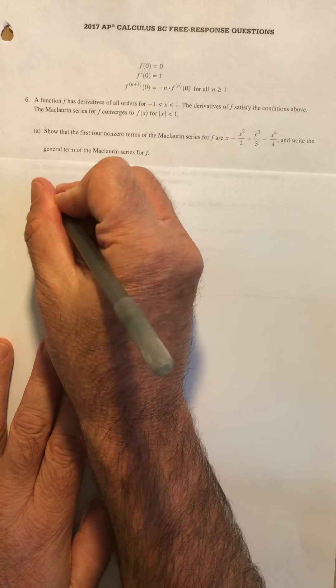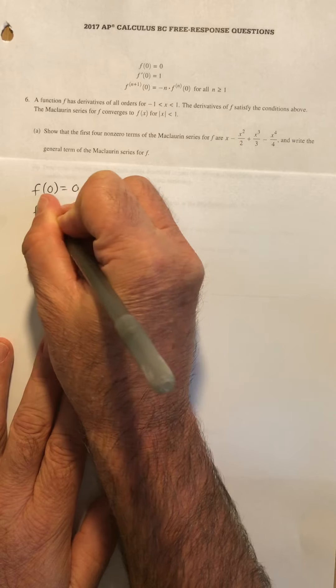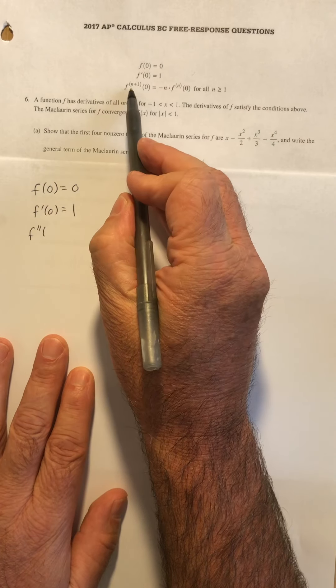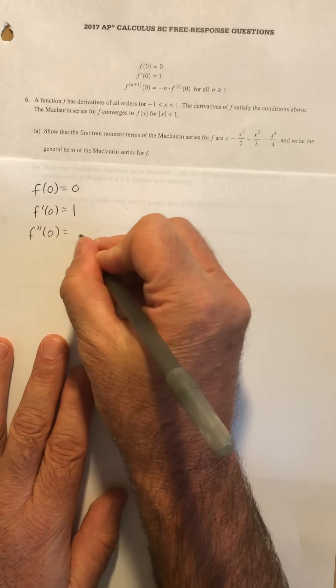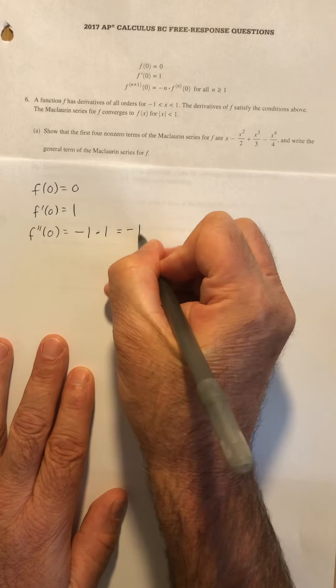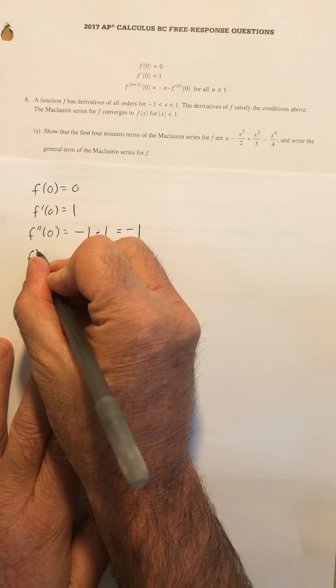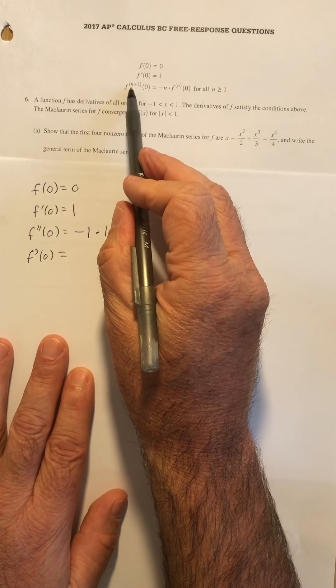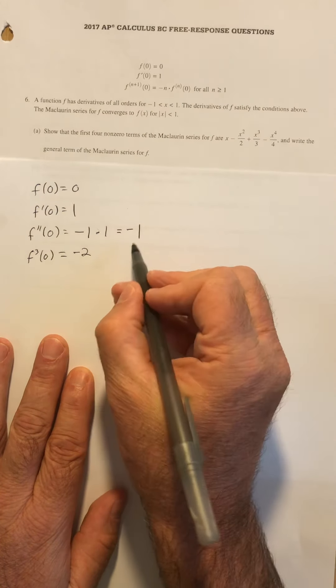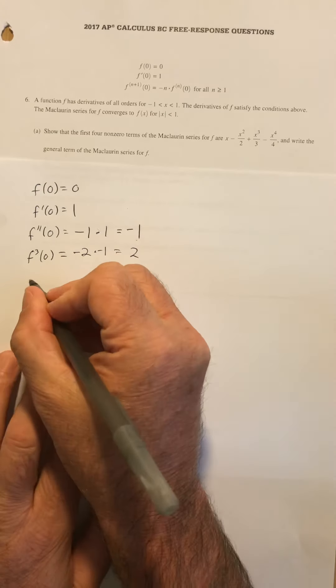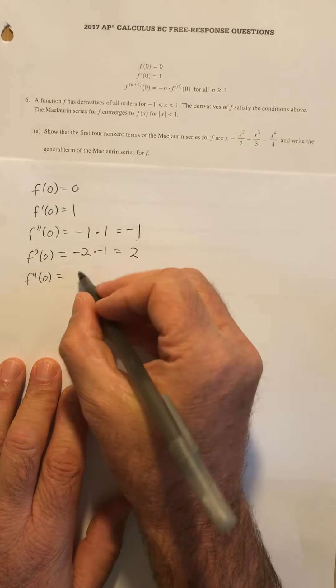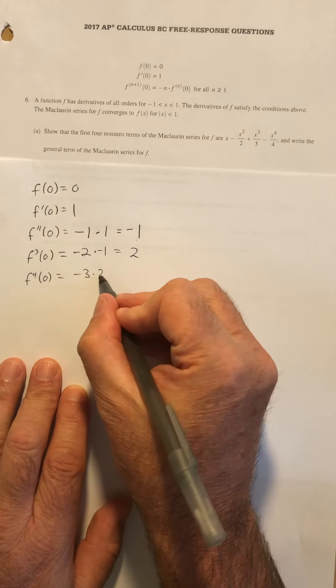So let's write a few more terms of that. We got the value of the function at zero. The value of the derivative at zero is one. The value of the second derivative, so that's when n equals one here, is going to be negative one times the first derivative at zero, which we know is one. So the second derivative ends up being negative one. The third derivative at zero is going to be when n equals two, third derivative. So that's going to be negative two times the second derivative, which is this number, negative one. And I get two for that. And let's do the fourth derivative, which is going to be n equals three. So that's going to be negative three times the third derivative, which is two, and I get six for that.